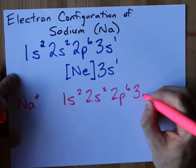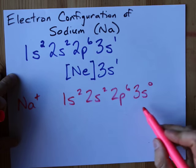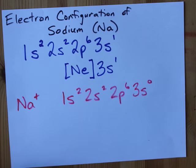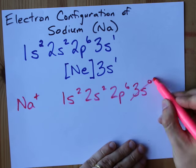You can write 3s0 here to emphasize that there are now no electrons there, but you don't have to. If you do, it is optional.